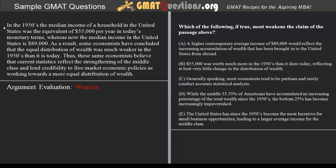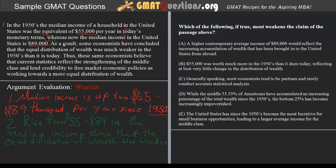Let's start with the first sentence. In the 1950s, the median income of a household in the United States was the equivalent of $55,000 per year in today's monetary terms, whereas now the median income is $89,000. So the median income is up from $55,000 to $89,000 per year since the 1950s, and this is in today's monetary terms. In the second sentence, a group of economists concluded from those statistics that the equal distribution of wealth was much weaker in the 1950s — that the lower median income in the 1950s reflects a situation where wealth distribution was much weaker than it is today.